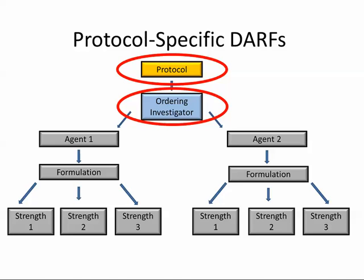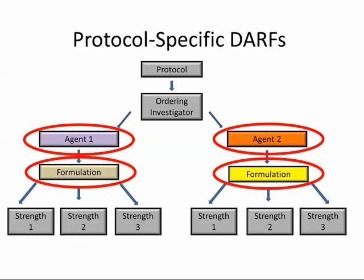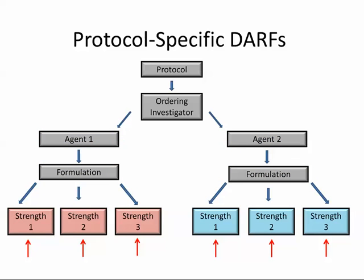Separate DARFs are required for each protocol and for each ordering investigator. Each agent formulation for that protocol must have a separate DARF. Additionally, each strength for that particular agent requires a separate DARF. In this example, six DARFs are required — one for each strength. PMB encourages sites to order agents for only one investigator per protocol to minimize the total number of DARFs being maintained.